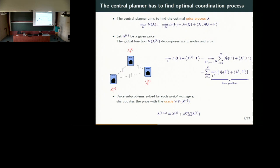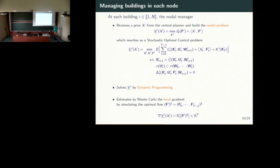By rewriting the problem we obtain completely independent subproblems at each node. You just have to consider the price at each node and solve this problem. Then each node sends back a solution and you can compute a gradient and iterate to find the next price to consider, continuing until convergence. At each node we consider this problem: we want to minimize our operational cost plus the prices times the importation flow F. This problem is a multi-stage stochastic optimization problem.